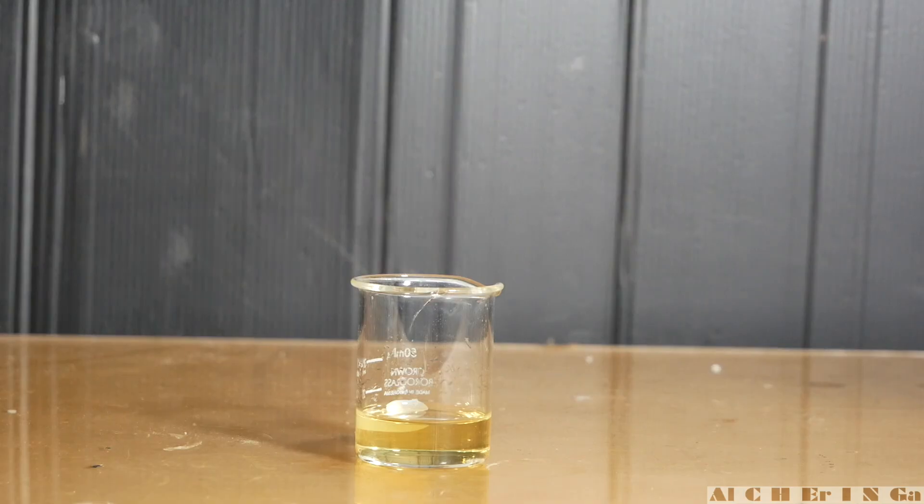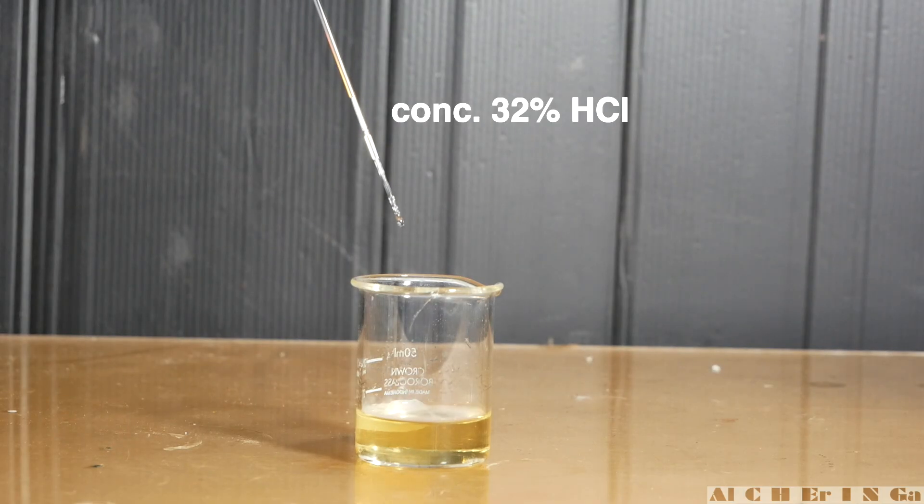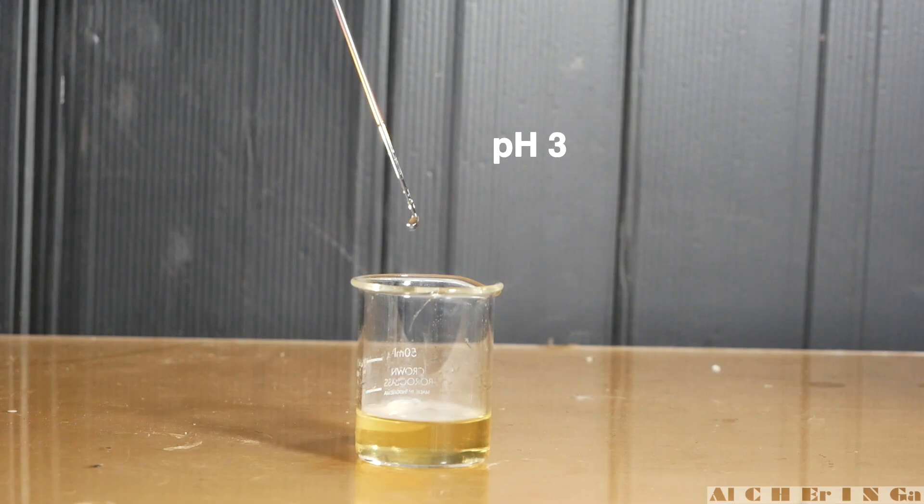Now, transfer the mixture into a suitable container and start adding concentrated 32% hydrochloric acid slowly to pH 3. As we can see, a white mist is given off.